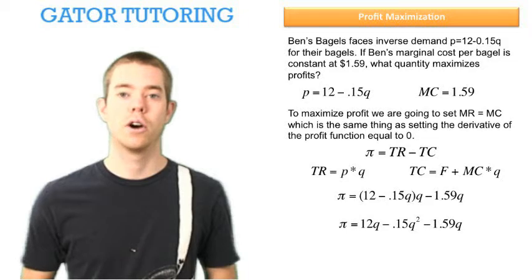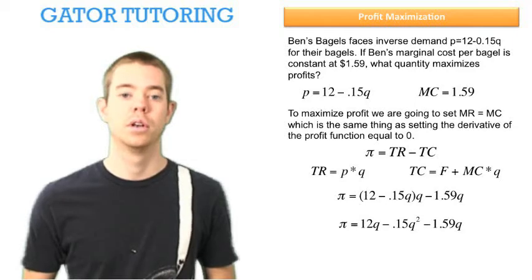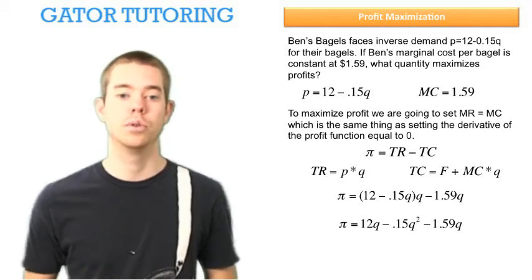So we can do a little algebra here. In the future, we won't distribute this Q out, but I want to show you how we get to the derivative. So for now, let's just distribute that Q through to get 12Q minus 0.15Q squared minus 1.59Q.